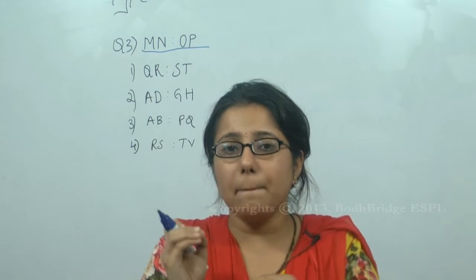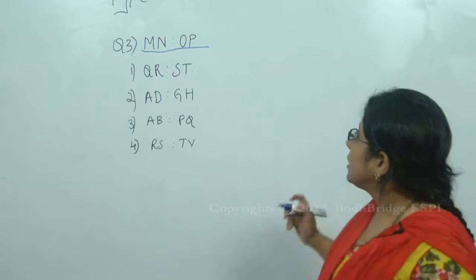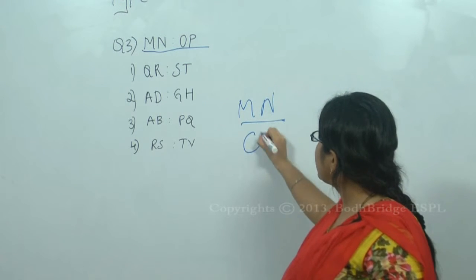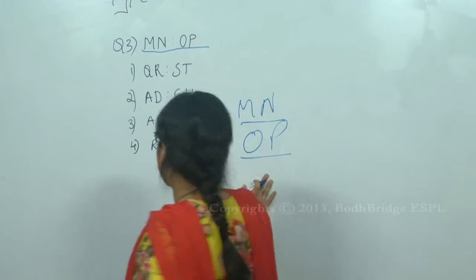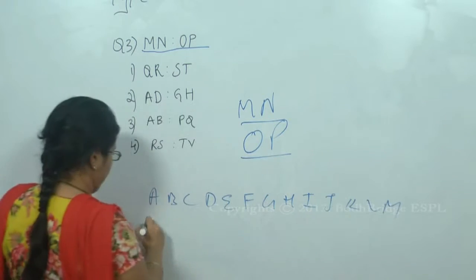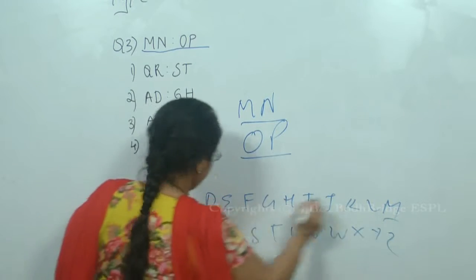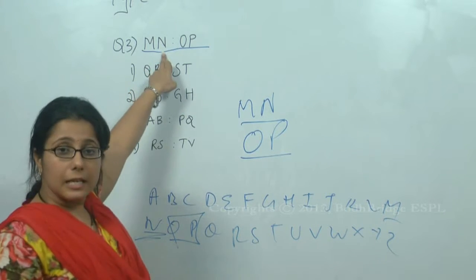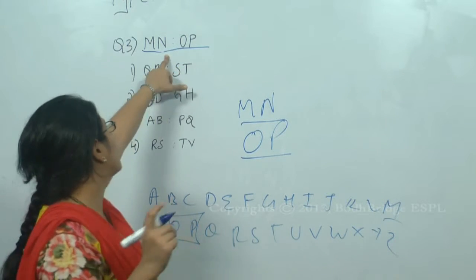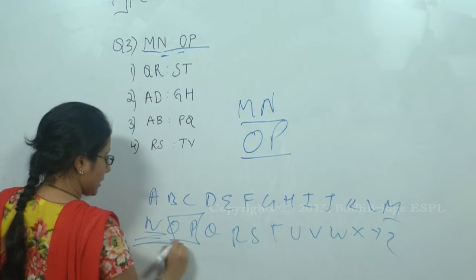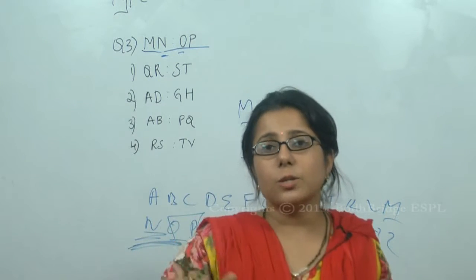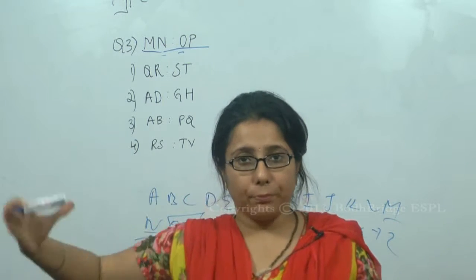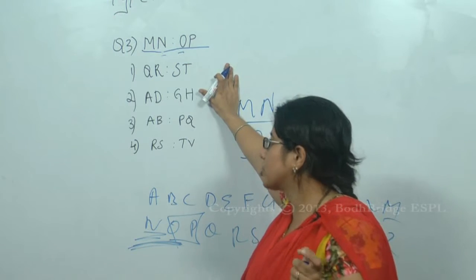Let's look at MN : OP. In both groups, we have pairs of consecutive letters in order. M and N are in consecutive order; O and P are also in consecutive order. Also, the second letter of the first group and the first letter of the second group — N and O — are consecutive to each other. So all the alphabets are in consecutive order. We have to find this same kind of relationship in the answer options.